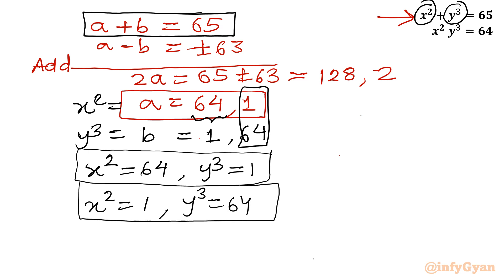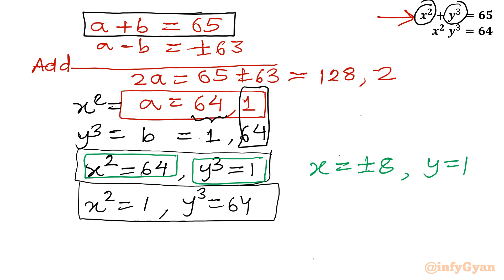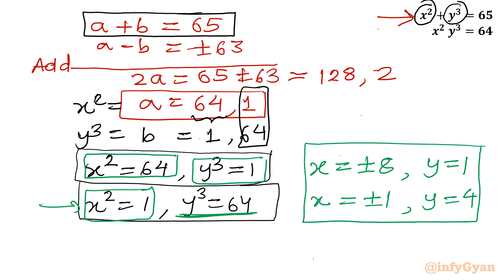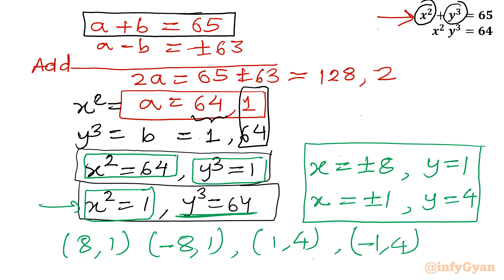Writing the final answer for method 1: from x squared equal to 64, x equals plus or minus 8; and y cubed equal to 1 means y equals 1. From the second set, x squared equal to 1 means x equals plus or minus 1, and y cubed equal to 64 equals 4 cubed, so y equals 4. In ordered pairs: (8,1), (-8,1), (1,4), and (-1,4).